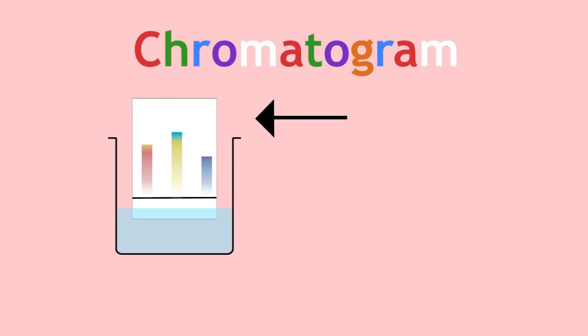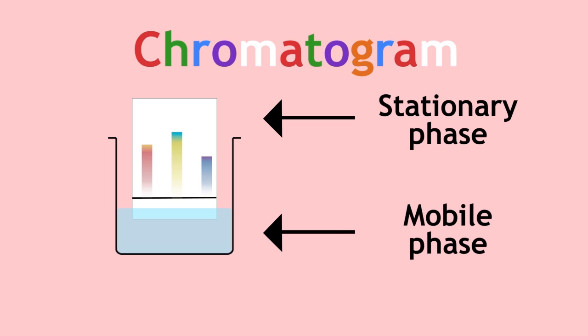The chromatography paper is called the stationary phase as it stays put. Water is called the mobile phase as it moves up the chromatography paper.